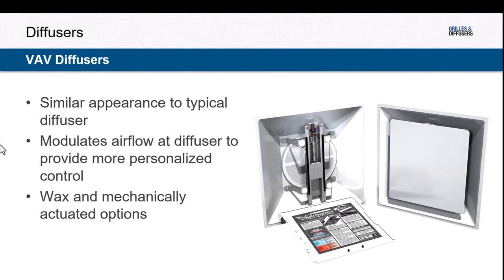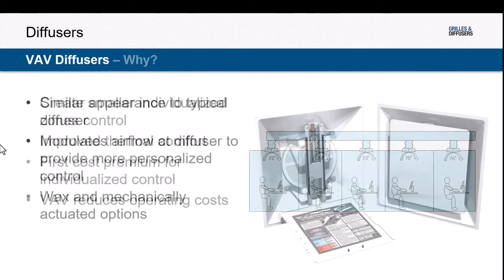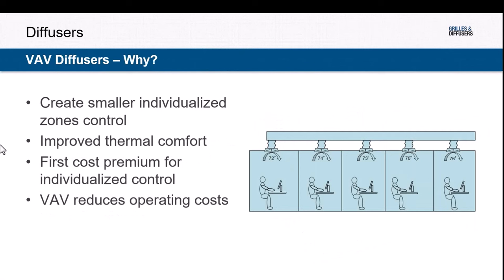Modulating diffusers and VAV diffusers provide an extra level of control with a similar appearance to a square plaque. Air volume is controlled directly at the diffuser by modulating components within the diffuser — this can be done electronically or with wax actuators. Modulating airflow directly at the diffuser gives the ability to create more individualized zones, accommodating different perceptions of thermal comfort. There is a premium cost associated, but it does give a lot more flexibility in achieving thermal comfort.